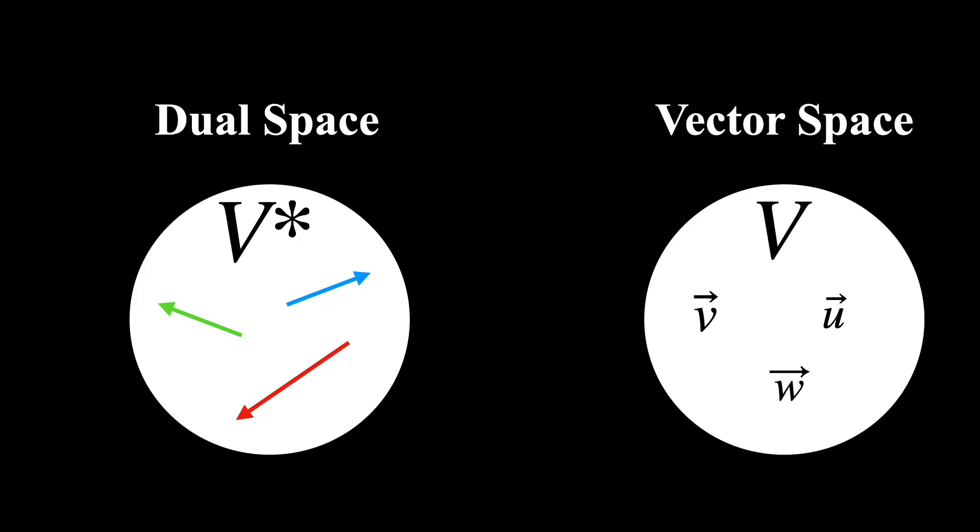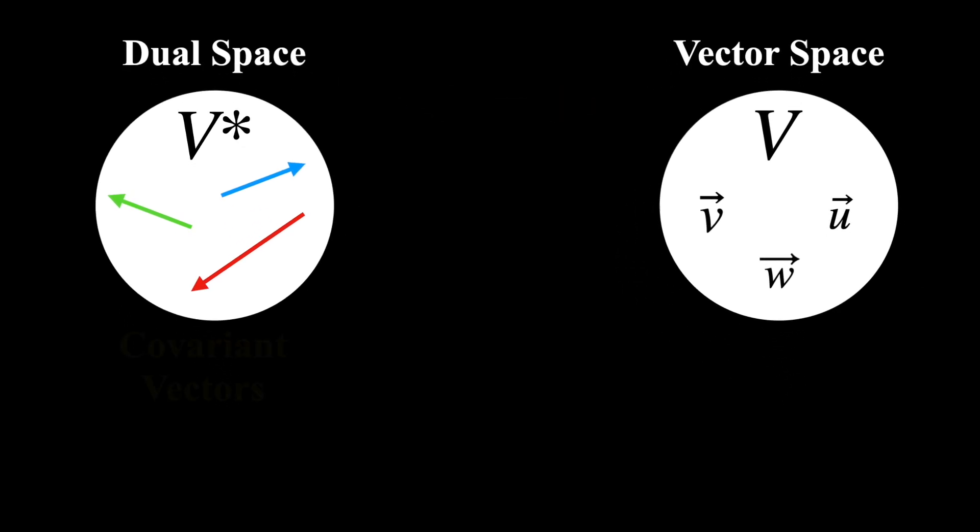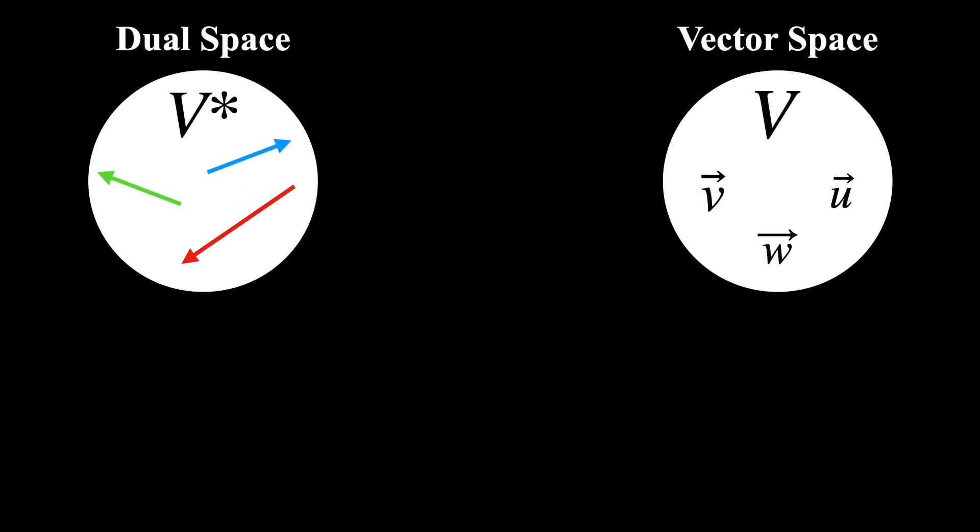So dual vectors or linear functionals are elements that live in the dual vector space. And this will hold for all vector spaces. So for any vector space V you can think of, there will always be an associated dual space V star that you can define by taking all of the linear functionals on V. And an alternative way to refer to these spaces that you might have seen is that the elements that live in the vector space are contravariant vectors, while the elements that live in the dual space are covariant vectors.